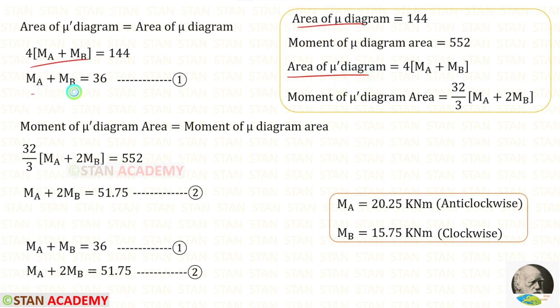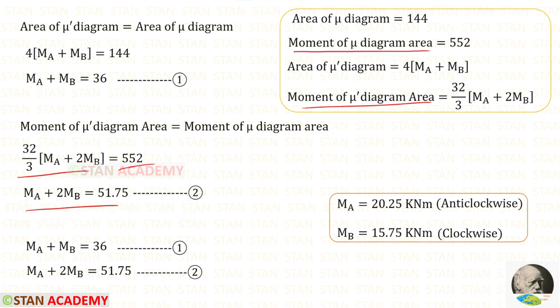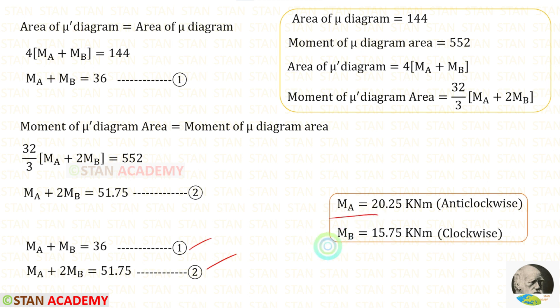Now we can equate the area of the mu diagram and area of the mu dash diagram to get the first equation. We now have two equations. Using a calculator to solve these two simultaneous equations, I have obtained the values of MA and MB. We have found both of the end moments.